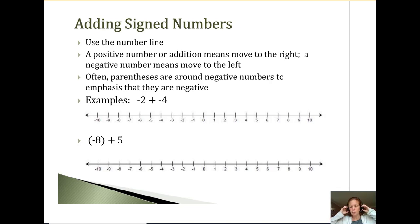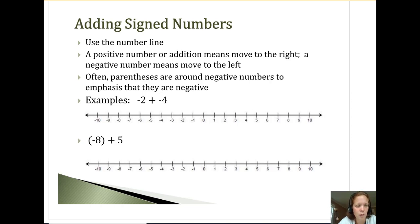With adding signed numbers — when we add negatives as well as positives together — one way we can do this is to use the number line. I'm going to do a couple that way first, just to kind of visualize what's happening. A positive number means we'd go to the right, a negative number means we'd go to the left.